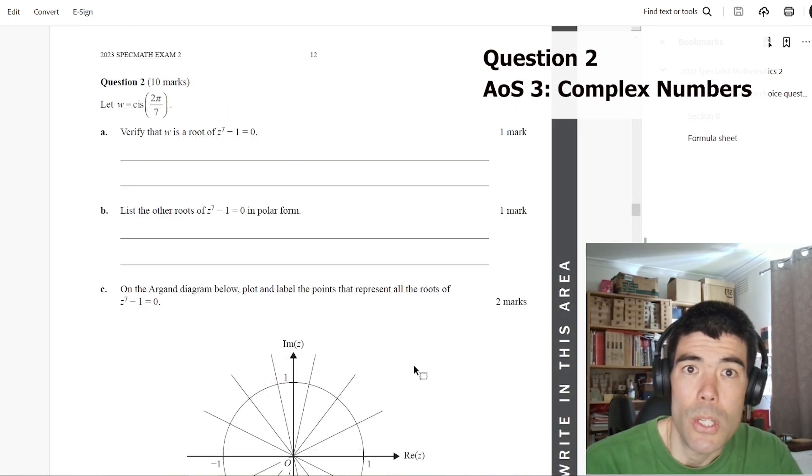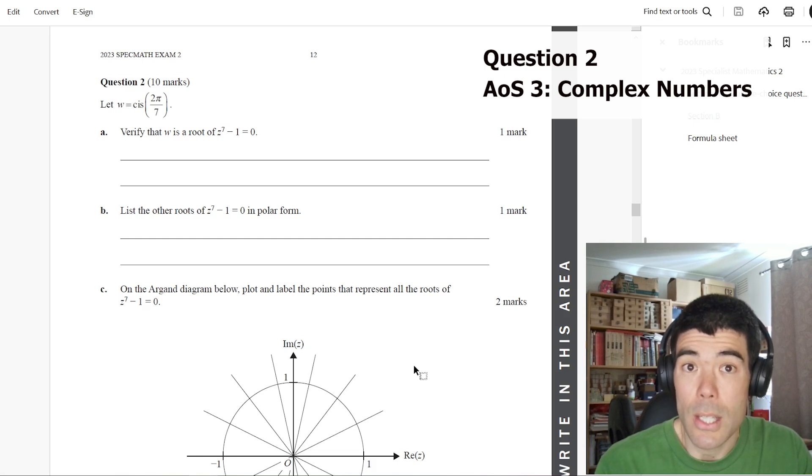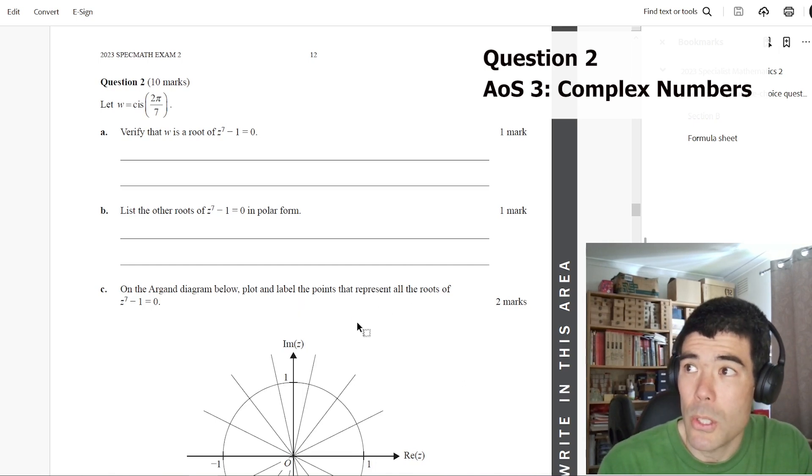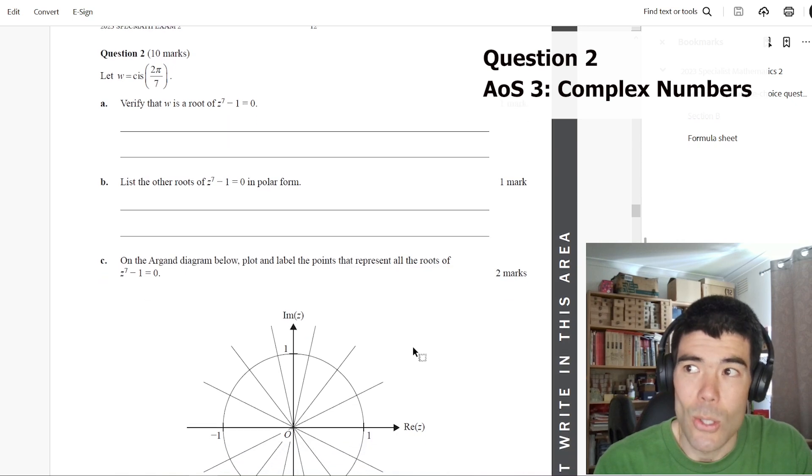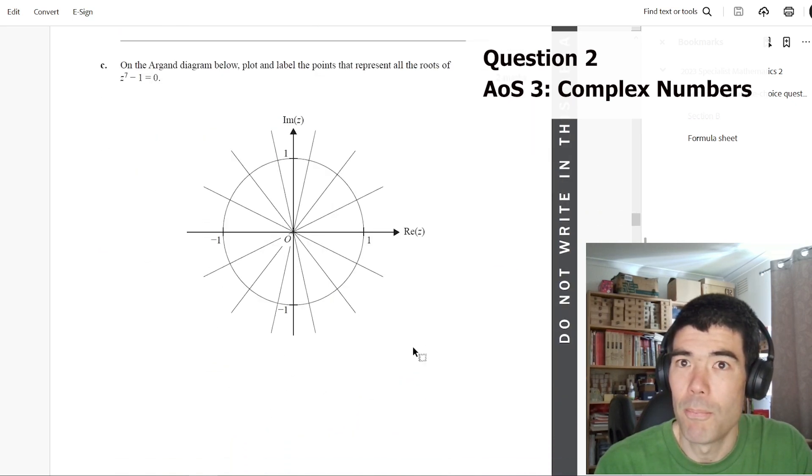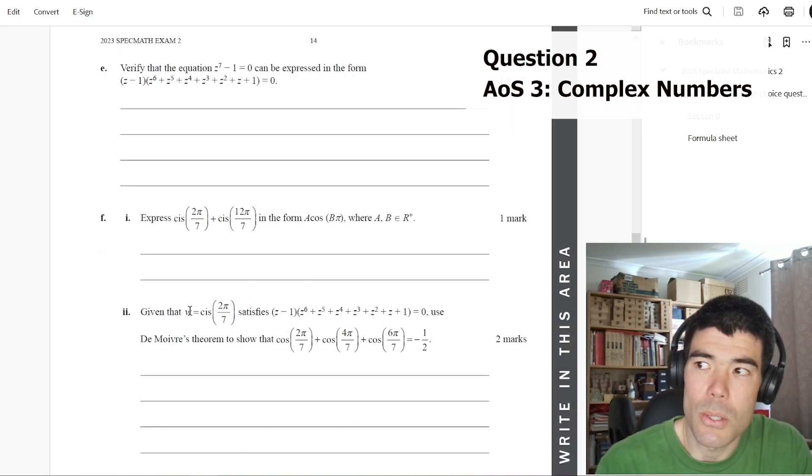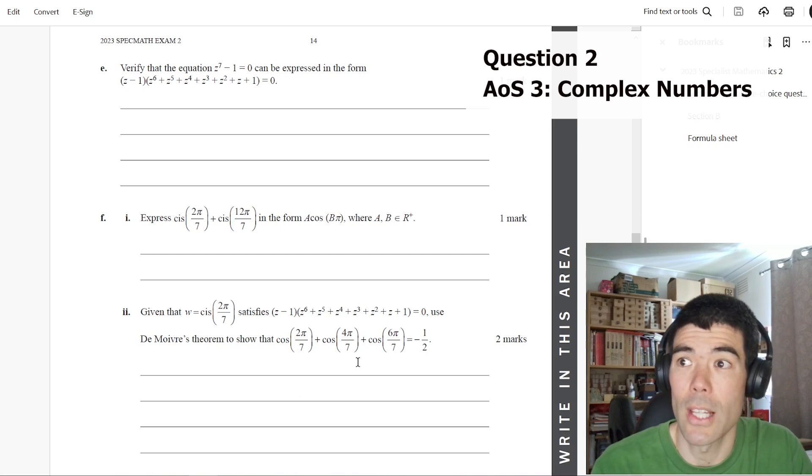Question two is a complex numbers question. Pretty much we always see a single extended response question devoted purely to complex numbers. So that's good, predictable for you. This is quite a nice question, actually, probably my favorite extended response question. So we might come back and talk about this one in a bit more detail. This was the part, this is the proof that students found challenging.